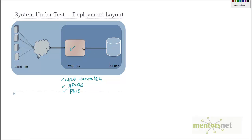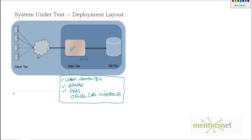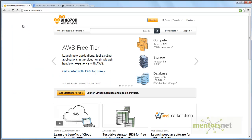On top of that, this web tier is going to talk to an Oracle database. To talk to an Oracle database from the middle tier, PHP needs an additional driver called OCI, or Oracle Call Interface. We need this Oracle Call Interface software to be installed and configured in this web tier. Once we have installed all the software, we are ready.